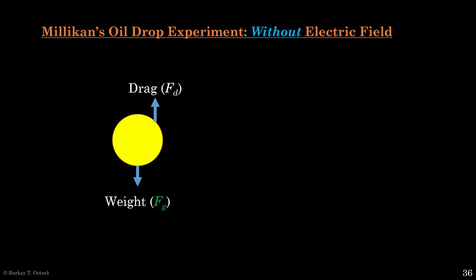The second force is air resistance, or drag, which always acts in the direction against an object's motion relative to air. Since the drop is falling down, drag will pull it up. This is the formula for drag. C stands for the cross section of the drop. Mu air is the viscosity of air, and lowercase v is how fast the drop is falling through air. Since the drop is a sphere, its cross section is a circular disc. We do the substitution, which gives us this.